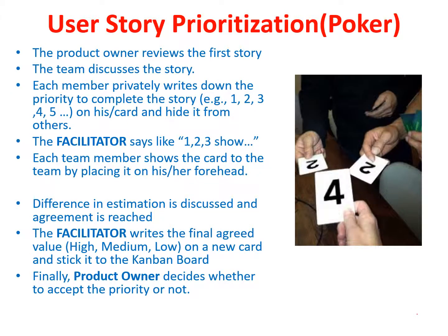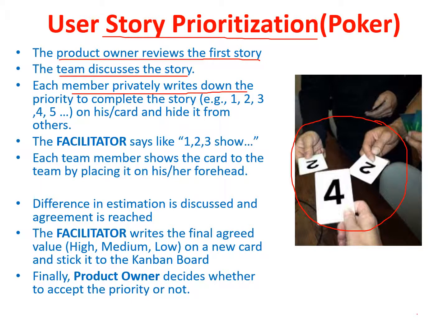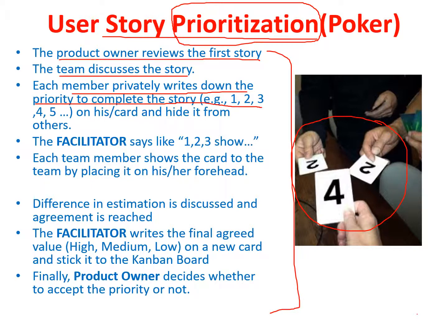Next is story prioritization. The process is the same: cards are hidden and the product owner reviews the first story, the team discusses it, and each member privately writes down a priority number. Priority can also come from the customer or product owner directly. If they haven't provided it, the team prioritizes in their own way.